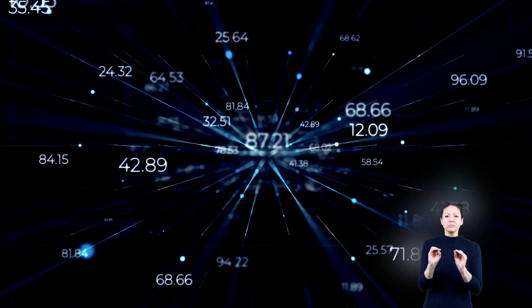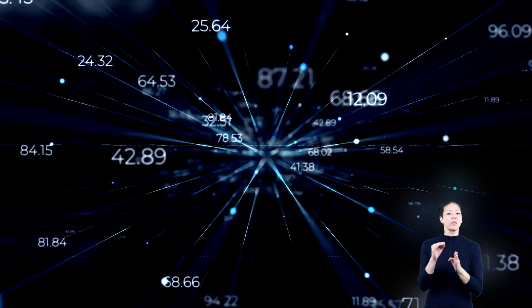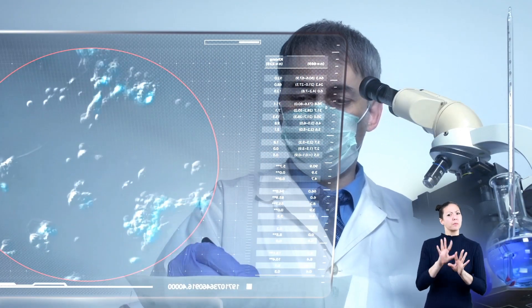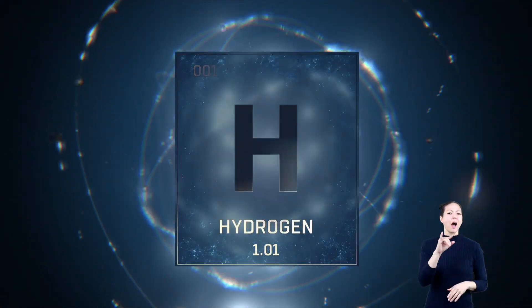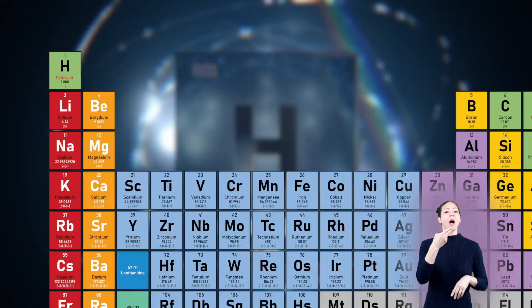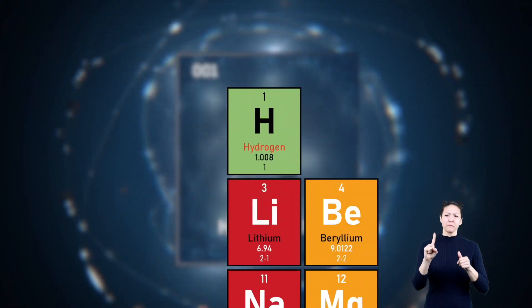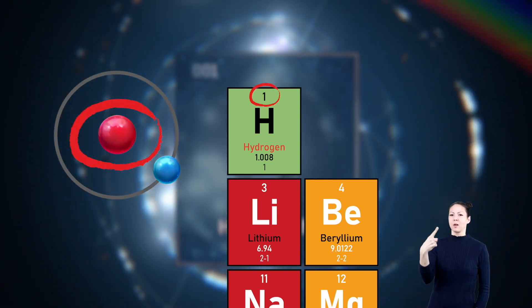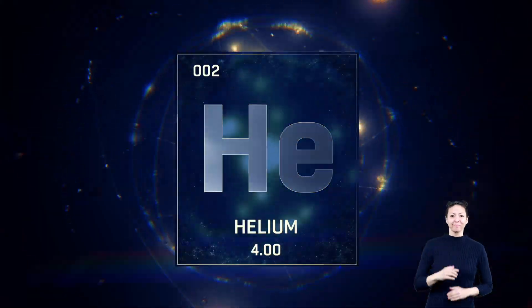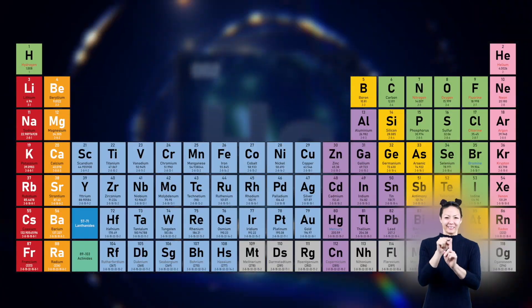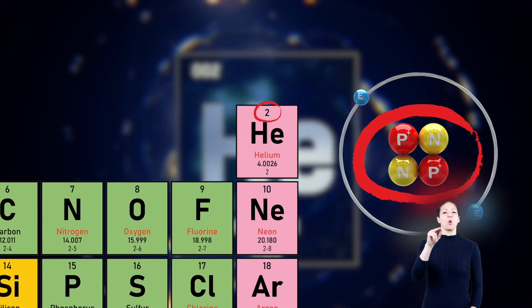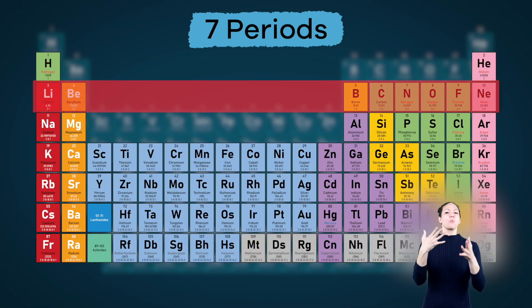In modern times, chemical elements are still arranged in order of their increasing atomic number, which is why this number is so important. Take hydrogen, for example — hydrogen is the first element listed on the periodic table because it has just one proton. Next on that same row you will find helium, which contains two protons.